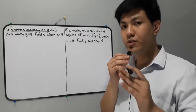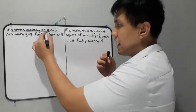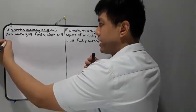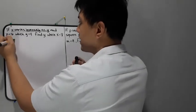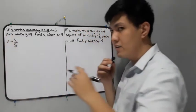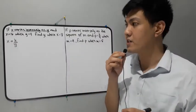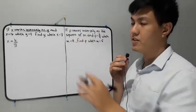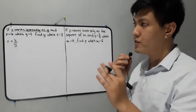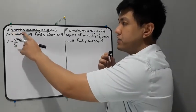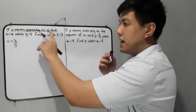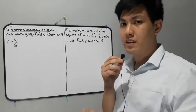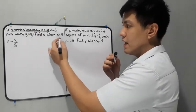The second step is to write the equation. X varies inversely as y, and x comes first, so we write x is equal to k over y, since our given is inverse variation. The next step is to divide the whole given statement into two parts. The first part is 'if x varies inversely as y and x is equal to 16 when y is equal to 4.' The second part is 'find y when x is equal to 8.'